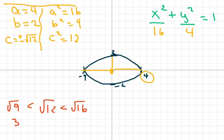So it's in between 3 and 4. And I just kind of estimate, so 3 and 4 here. It always lies on the major axis.